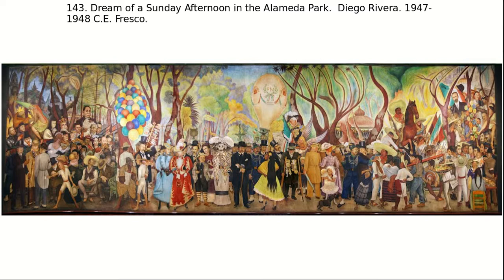The last work I'm going to lecture on today is work number 433, Dream of a Sunday Afternoon in the Alameda Park by Diego Rivera — yes, Frida Kahlo's husband. He painted this mural in 1947 and finished it in 1948. This mural is a fresco — wet paint into plaster. He was a Mexican painter and muralist.